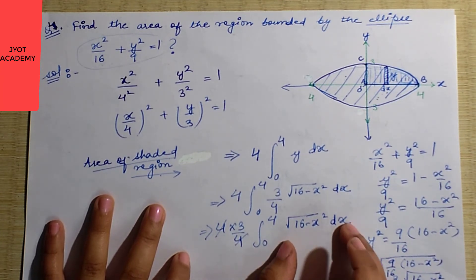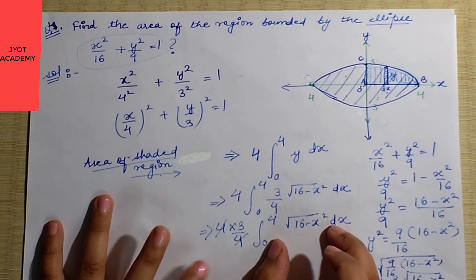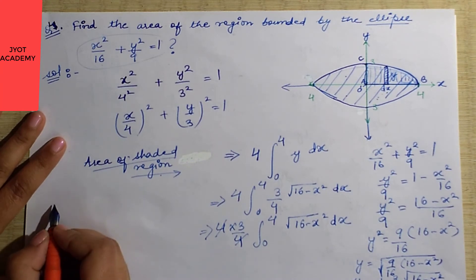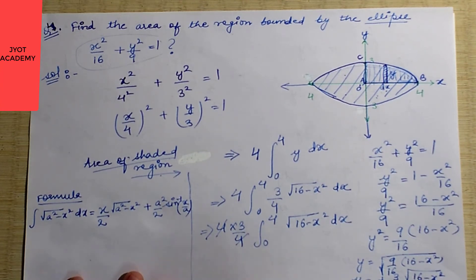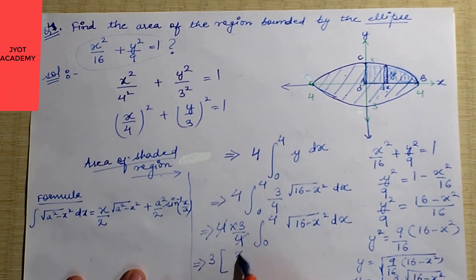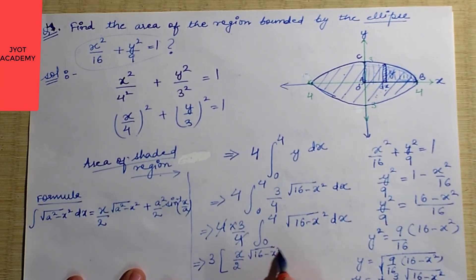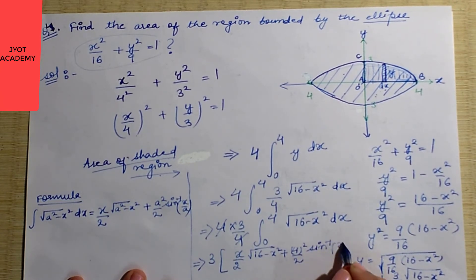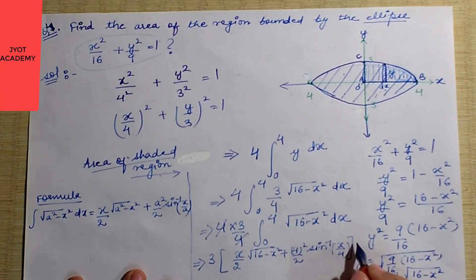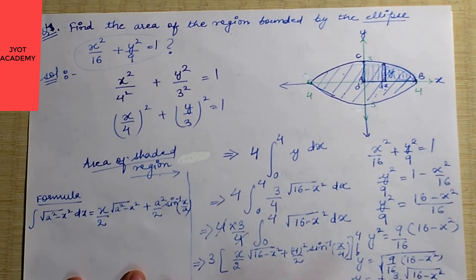The 3/4 is a constant and comes outside the integral. The integration of root(a squared minus x squared) uses the standard formula from Exercise 7.8. Here a equals 4, so a squared equals 16. Applying the formula gives: (x/2) times root(16 minus x squared) plus (16/2) times sine inverse (x/4), with limits from 0 to 4.